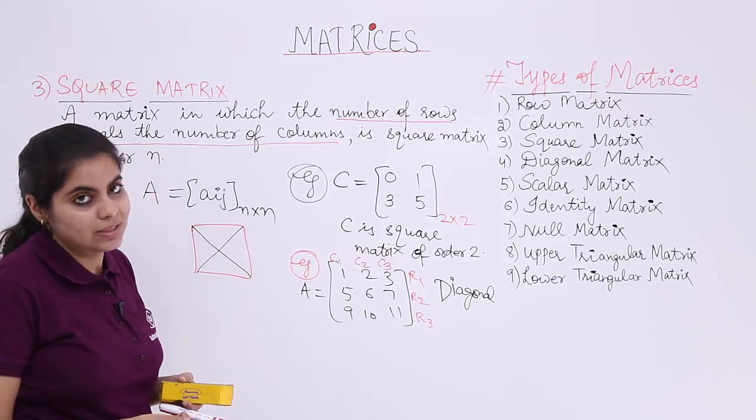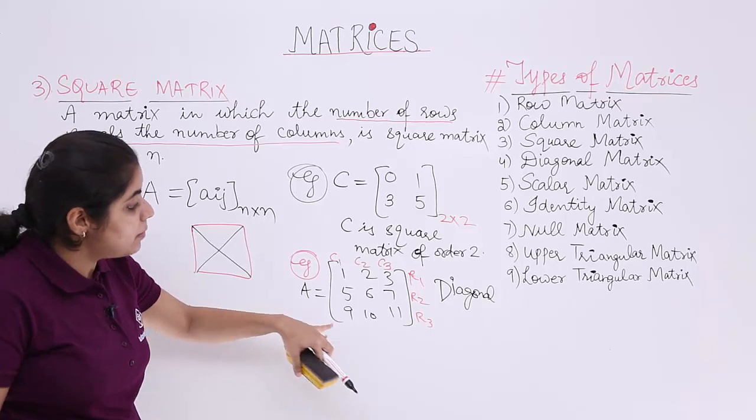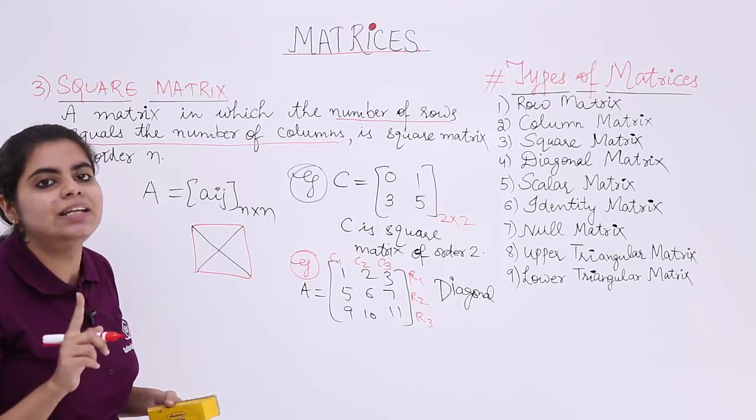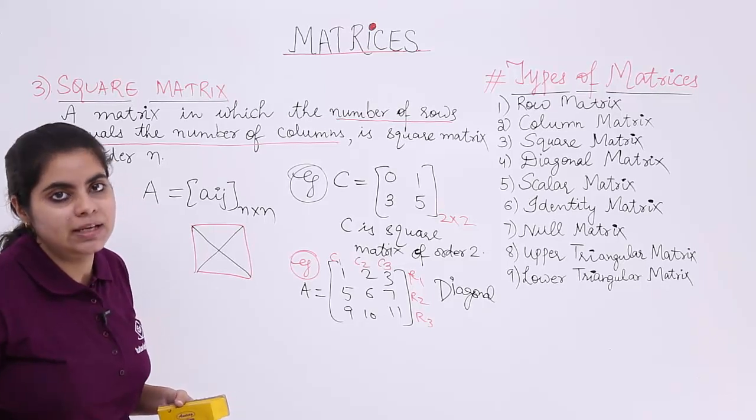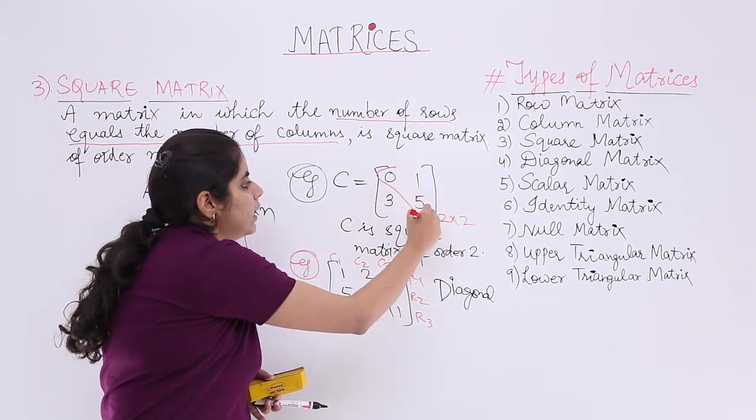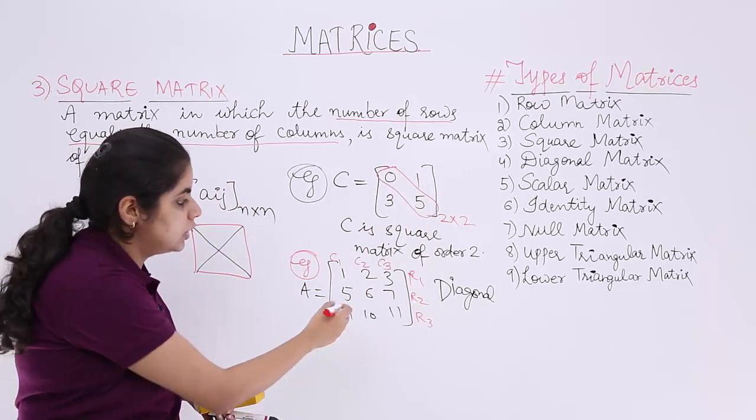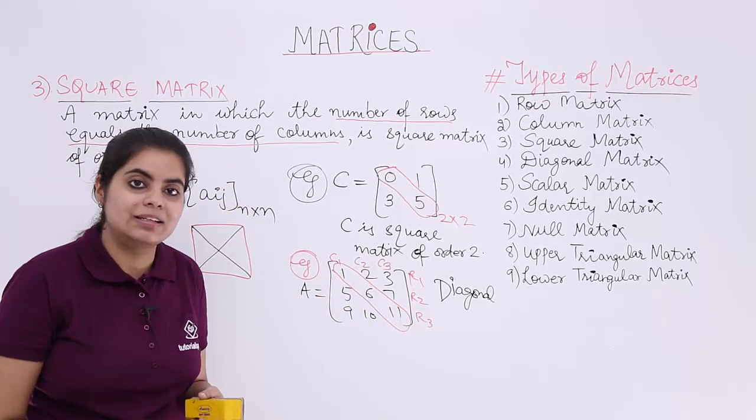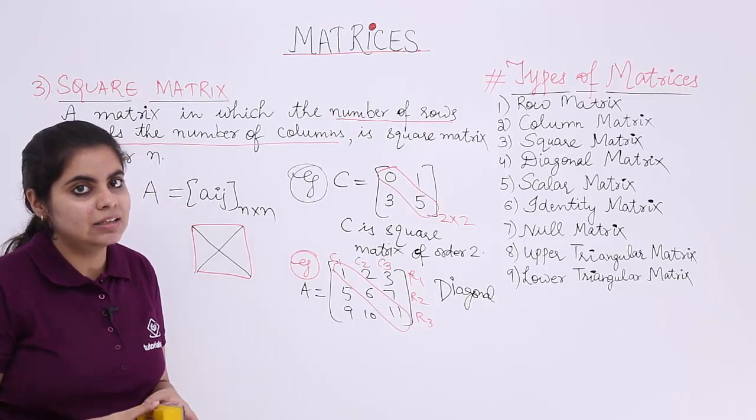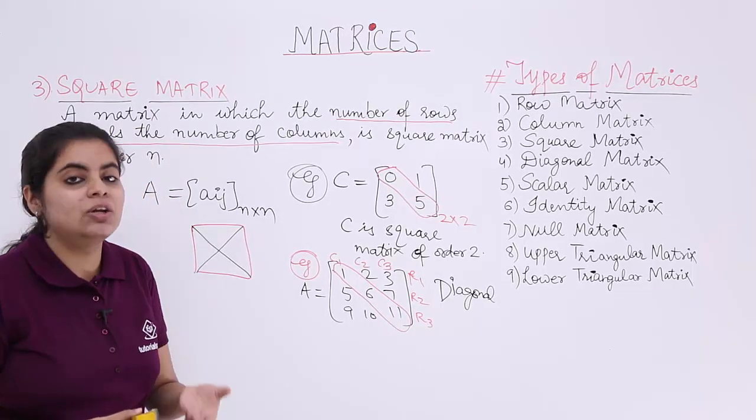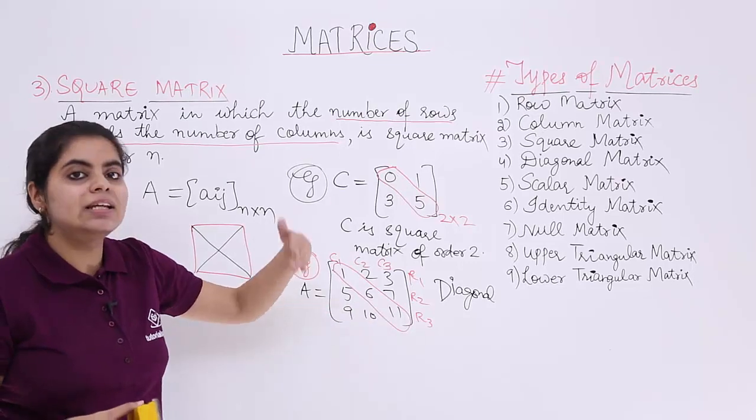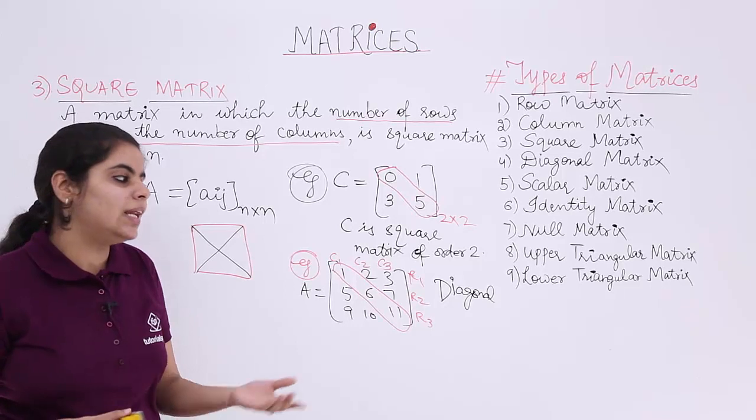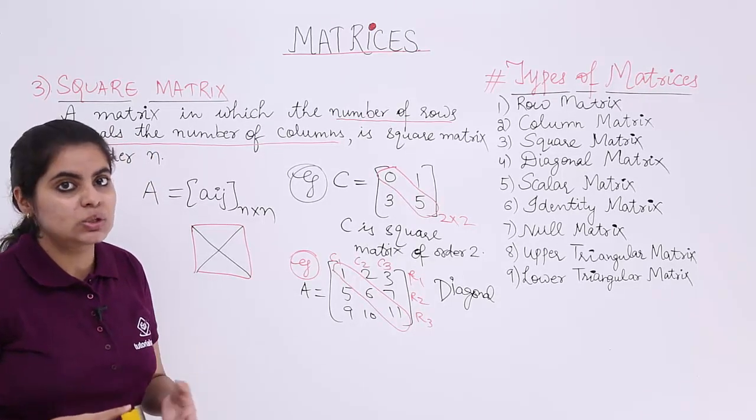Diagonals are which join the opposite vertices. In the matrices also, there are how many diagonals? Two, but we consider only one as the leading diagonal or the principal diagonal. So 0 and 5 comprise my diagonal. Here also, 1, 6, 11 comprise my diagonal. This diagonal is called as the leading diagonal or the main diagonal or the principal diagonal, which we will be seeing in the next video which is called as diagonal matrix, but it is related to square matrix only. Hence I took this up in the topic of square matrices.